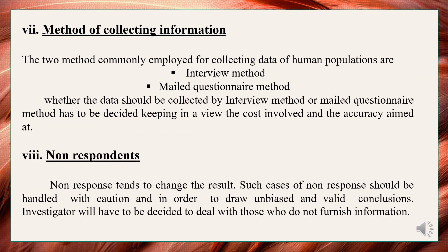Method of collecting information: The two methods commonly employed for collecting data from human populations are: First, the interview method — an interview is a qualitative research method that relies on asking questions in order to collect data, involving two or more people, one of whom is the interviewer asking the questions, differentiated by their level of structure. Second, the mailed questionnaire method — mailed questionnaires are administered by mail to designated respondents under an accompanying cover letter, and the answers are written by the respondent and returned to the research organization. The choice between interview method and mailed questionnaire method depends on cost involved and the accuracy aimed at.